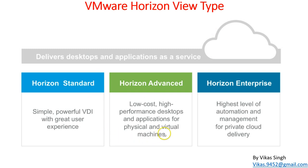Horizon Enterprise is the highest level of automation and management for private cloud delivery. This is where you can integrate your entire environment and build a private cloud running on VMware infrastructure, delivering desktop and applications as a service. You can create a private cloud using VMware products and deliver applications or desktops through automation and management all at once.